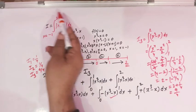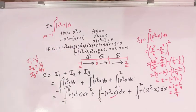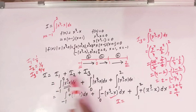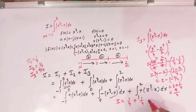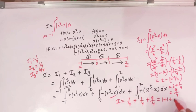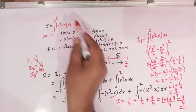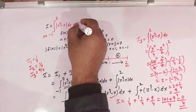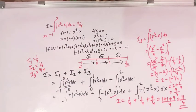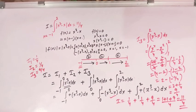Now the overall value of I is equal to the sum of the three integrals: I1 plus I2 plus I3 equals 1/4 plus 1/4 plus 9/4, which is 1 plus 1 plus 9 over 4, that is 11/4. So the value of the integral is 11/4. This is how we solve this integral.